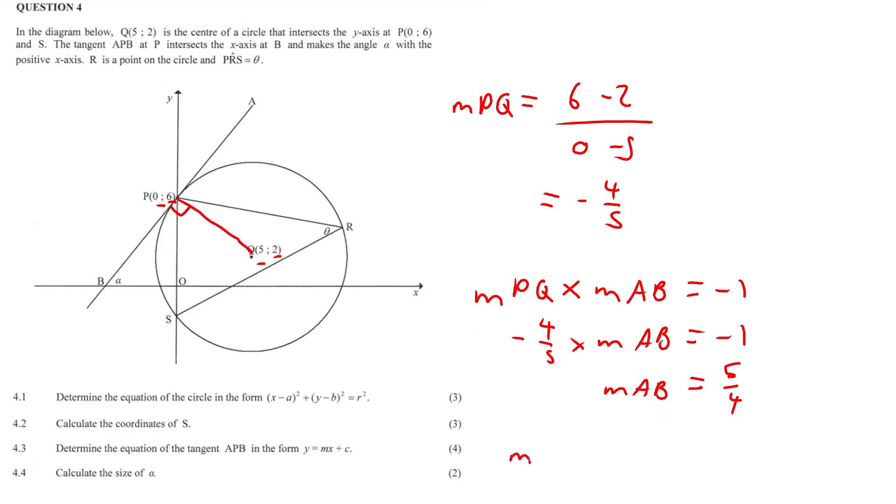So in other words, M, or rather line AB has the equation y equals 5 over 4, so that's our gradient sorted, plus the y intercept, and that is 6. And that's it.